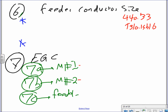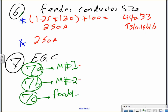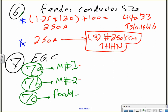Feeder conductor: 1.25 × 120 (largest) + 100 = 250 amps → Table 310.15B16 → three conductors, 250 kcmil THHN. If in a wet location, use THHW or THW.